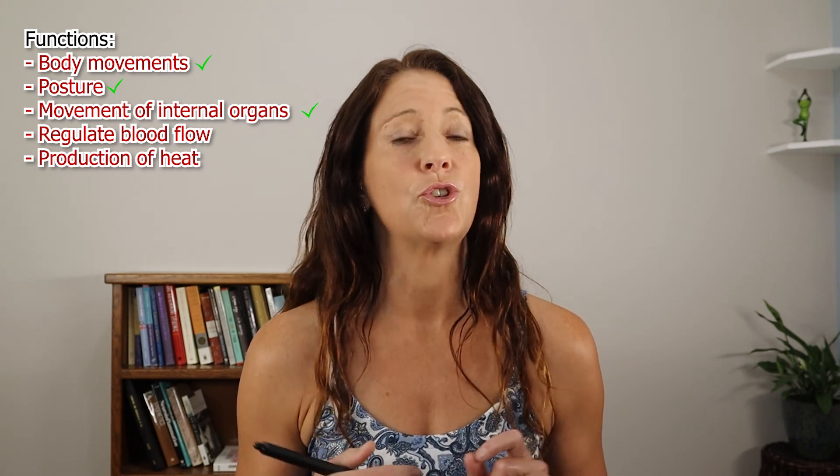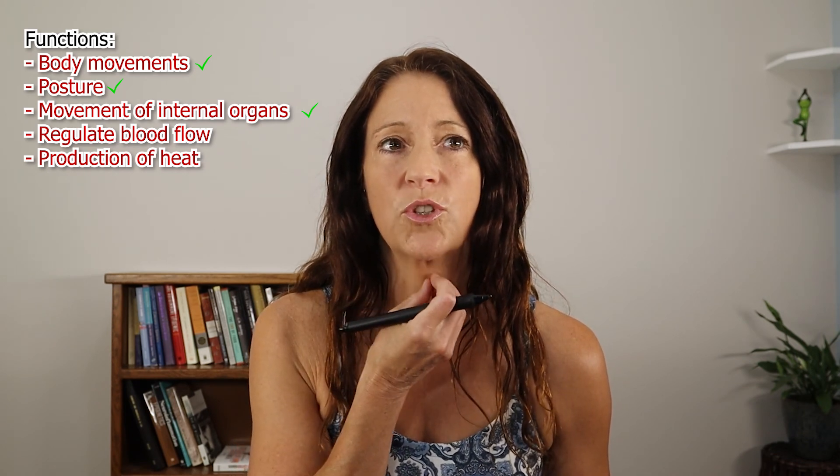Muscles also allow our internal organs to move. Think about digesting food — once we swallow the food it has to go down the esophagus, and there are muscles in there that push the food through until it gets to our stomach. Then the stomach has to contract and mush the food, and it has to pass through the small intestine.